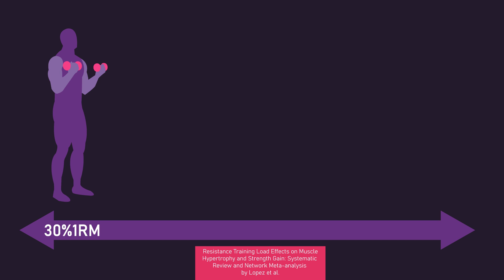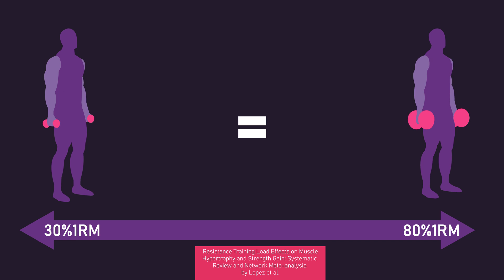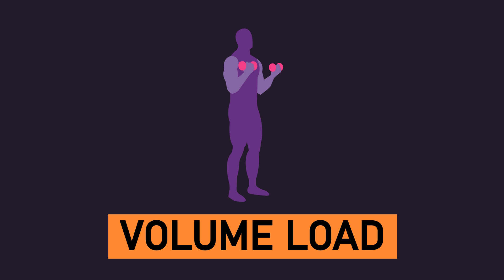As explored in previous videos, there's quite a bit of evidence that with all other training variables equal, performing repetitions to or very close to failure with a 30% 1RM load is as effective for muscle hypertrophy as performing repetitions to or very close to failure with an 80% 1RM load. An individual can roughly perform 30-ish repetitions to failure with a 30% 1RM load, and roughly 8-12 repetitions to failure with an 80% 1RM load. The volume load you can achieve with a 30% 1RM load is greater than the volume load you can achieve with an 80% 1RM load.